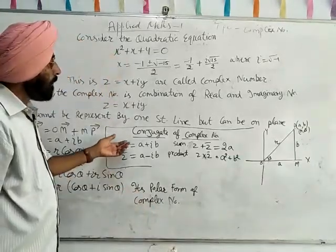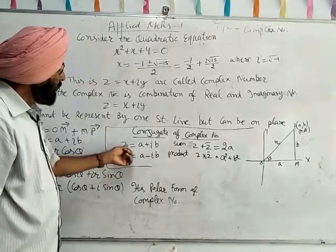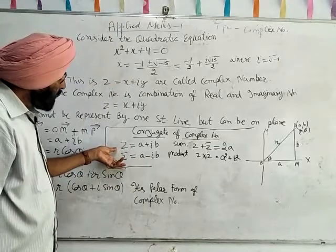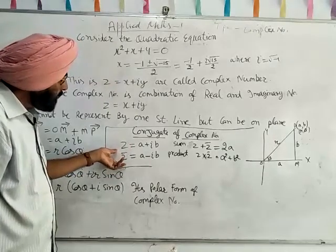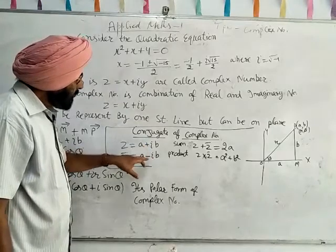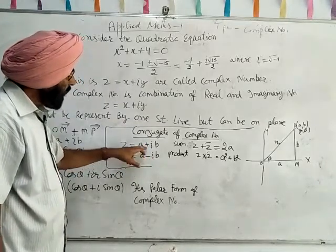There is a conjugate of complex number. If z = a + ib is a complex number, then the conjugate of this number is a - ib. Only the sign between imaginary and real part changes.